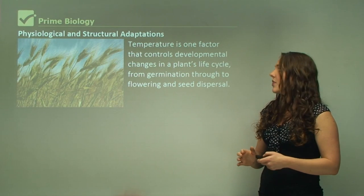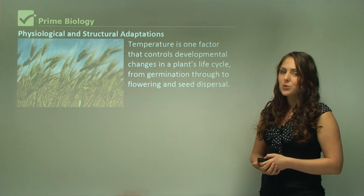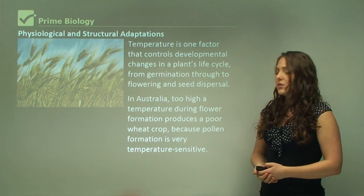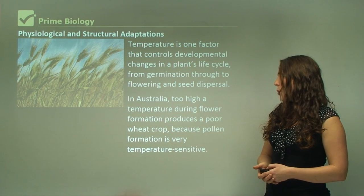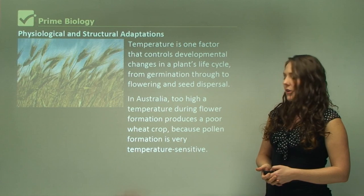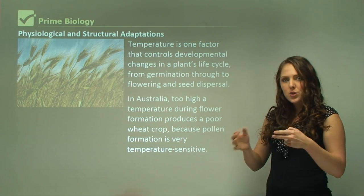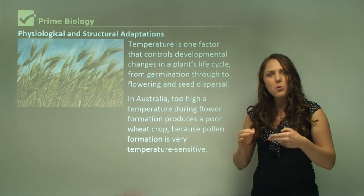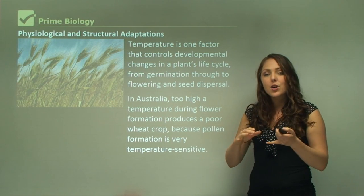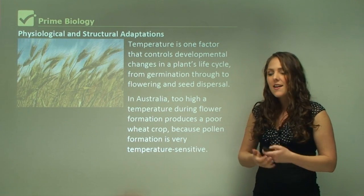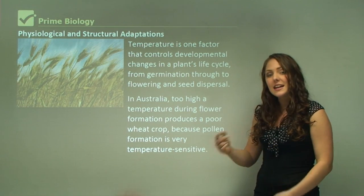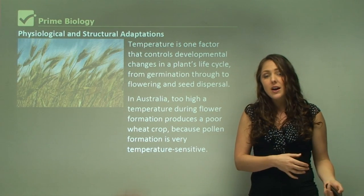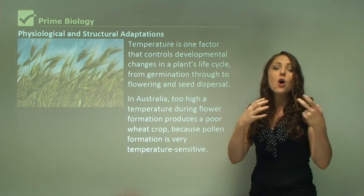Temperature is one factor that controls developmental changes in a plant's life cycle, from germination through to flowering and seed dispersal. In Australia, too high a temperature during flower formation produces a poor wheat crop because pollen formation is very temperature sensitive. When the first Australians brought wheat to Australia, they got the crop from England. The problem was that wheat had adapted to England's cold, wet environment. When that wheat crop came to Australia, it didn't survive — the crop that did survive came from a hotter environment.